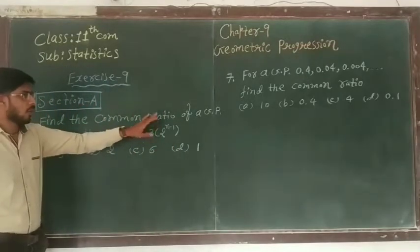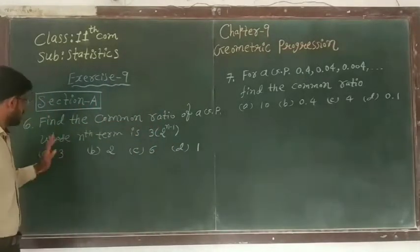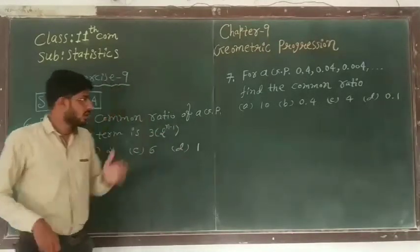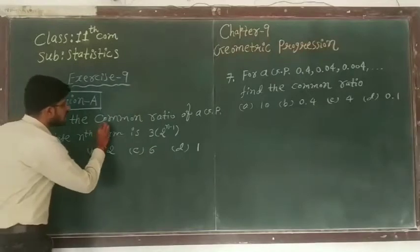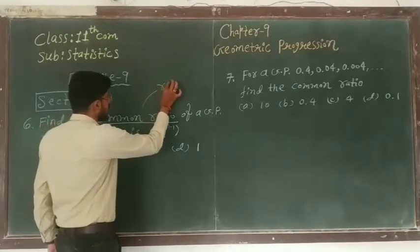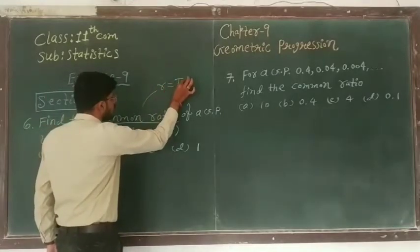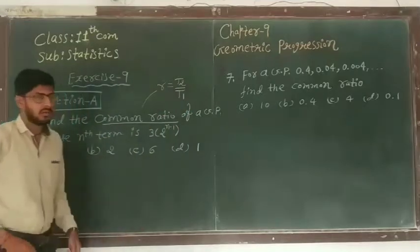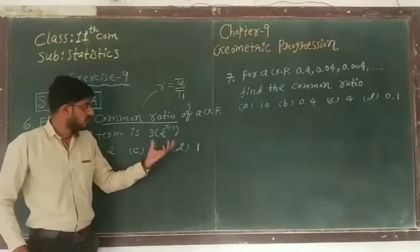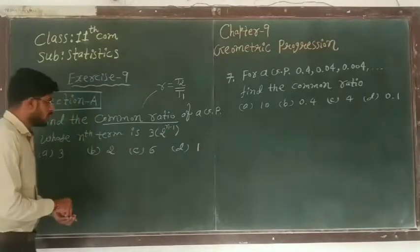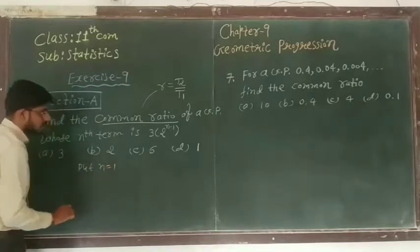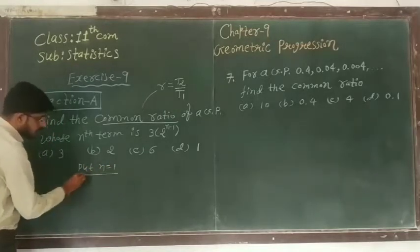Find the common ratio of a GP whose nth term is 3 into 2 raise to n minus 1. So here we have to find out common ratio. Common ratio r is given by the second term upon first term, t2 upon t1. So simply we have to find out first and second term from nth term. So put n equal to 1. So it gives first term.